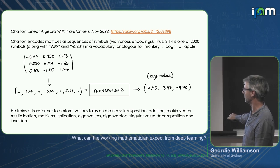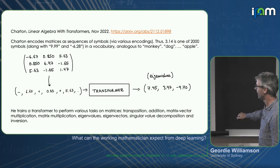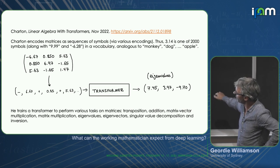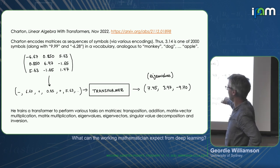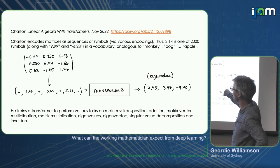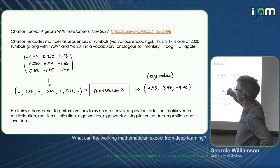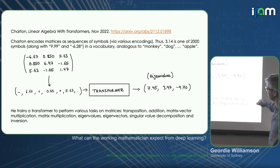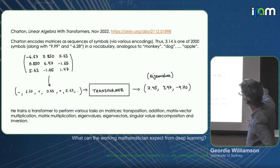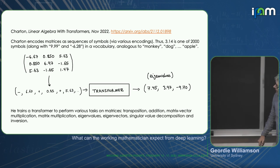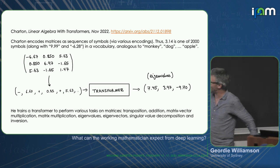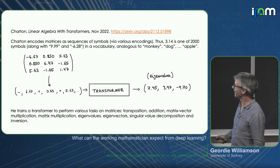So here's an example of the task, the eigenvalue task. So he looks at transposition, addition, matrix vector multiplication, matrix multiplication, eigenvalues, eigenvector singular value decomposition, and inversion. This is the most interesting task. There's various encodings as how you put your real numbers as a sequence. He uses a vocabulary which has the real numbers with two decimal places between zero and ten. And then he has these minus and plus symbols to indicate sign, but he experiments with various encodings. And these go into the transformer, and then out should pop the eigenvalues in decreasing order.